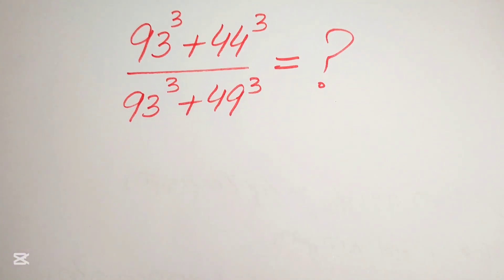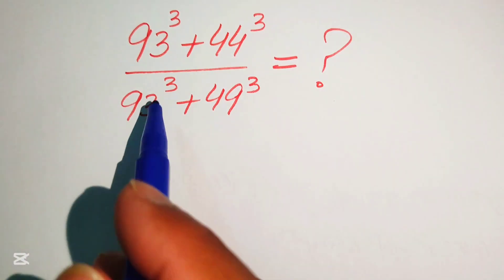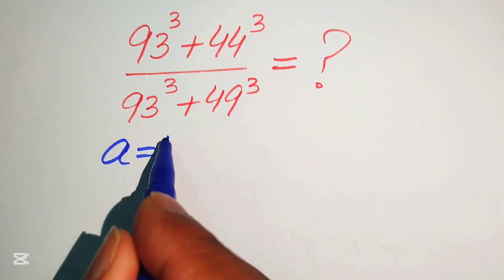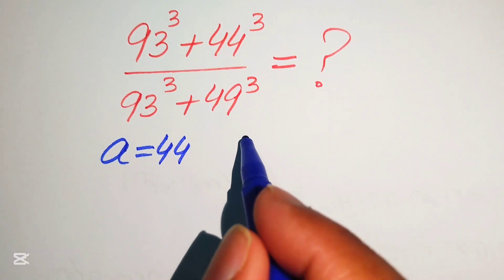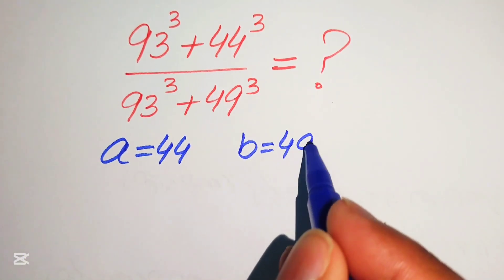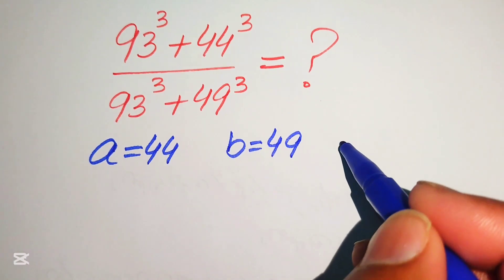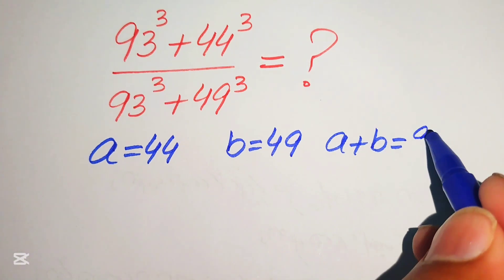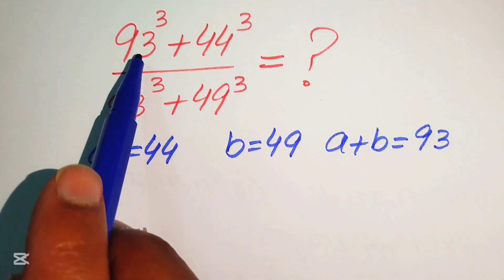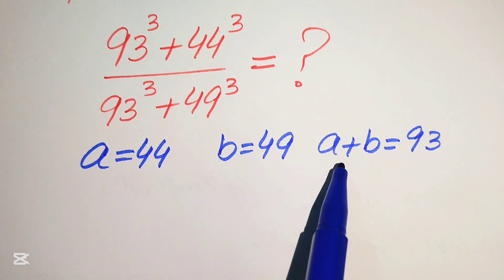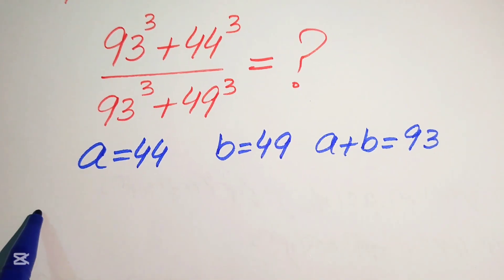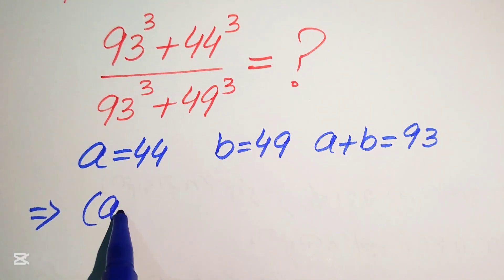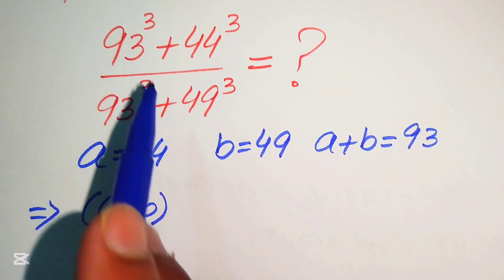The very first step is to use substitution. We take 44 equals to a and 49 equals to b. If we add a and b, we get a plus b equals to 44 plus 49 equals to 93. So we substitute: 93 equals a plus b, 44 equals a, and 49 equals b.